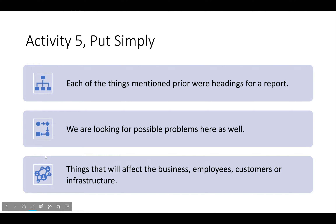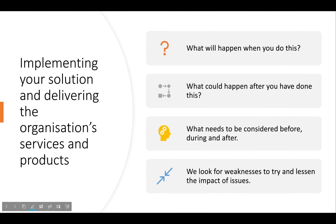Each of the things mentioned prior are headings for a report. We are looking for possible problems — things that will affect the business, employees, customers, or infrastructure. For implementing your solution and delivering the organization's services and products, ask: what will happen when you do this? For example, when you upgrade the entire company's network to virgin fiber optic and 5G, the owner is obviously going to pay out more money.